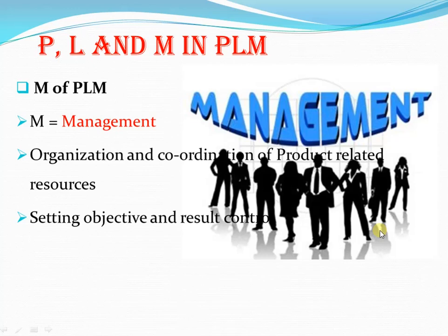M means Management. Management of product includes activities such as organization and coordination of product-related resources. The product must be managed in all five phases to make sure that everything works well and that the product makes good money for the company. The management needs to set objectives and control the obtained results.